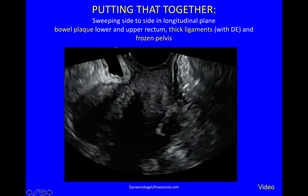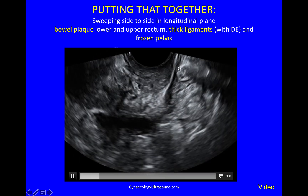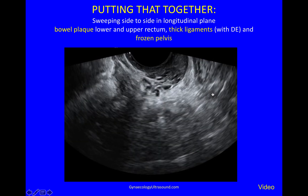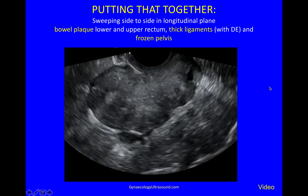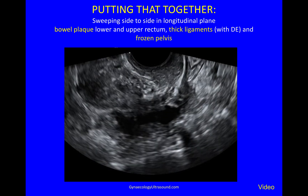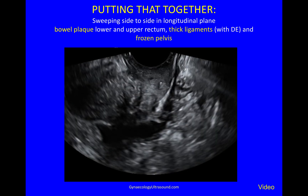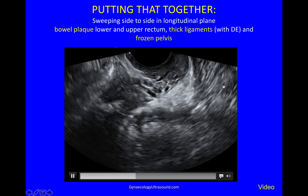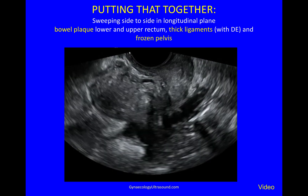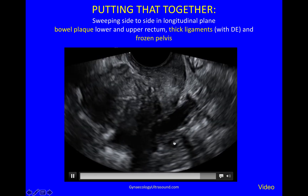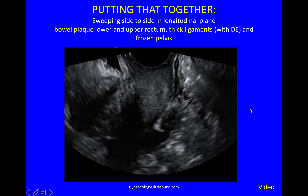If you put that together, staying in the longitudinal plane, sweeping from side to side, we're going to look at normal muscularis coming in there, then looking at this large bowel plaque attached to the back of the uterus, and thick ligaments with deep endometriosis. To do the sliding sign, you just very gently press in and out. It shouldn't hurt — you have to be very, very gentle. You can see nothing moved together at all; it all moves as a block. Now you can see the bowel plaque, and now the sliding sign — all of this moves together as a block. So this is a frozen pelvis.